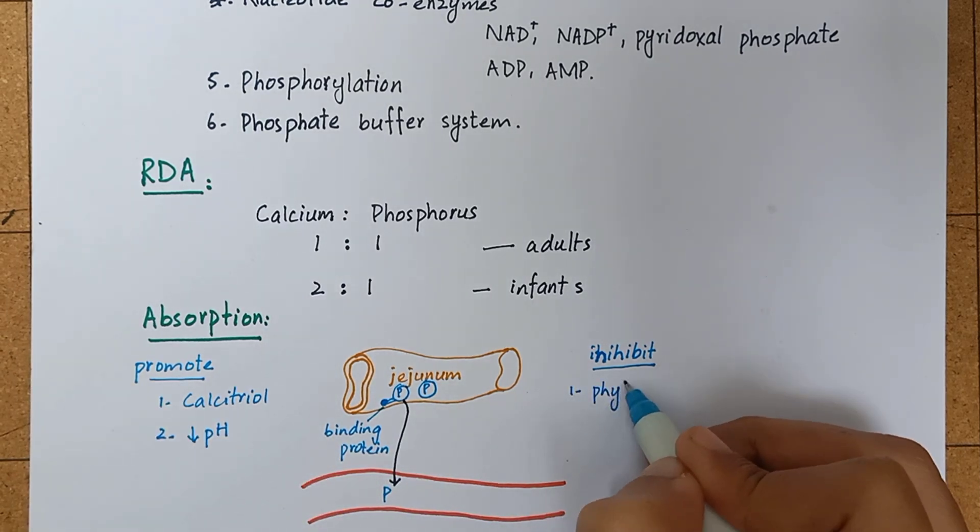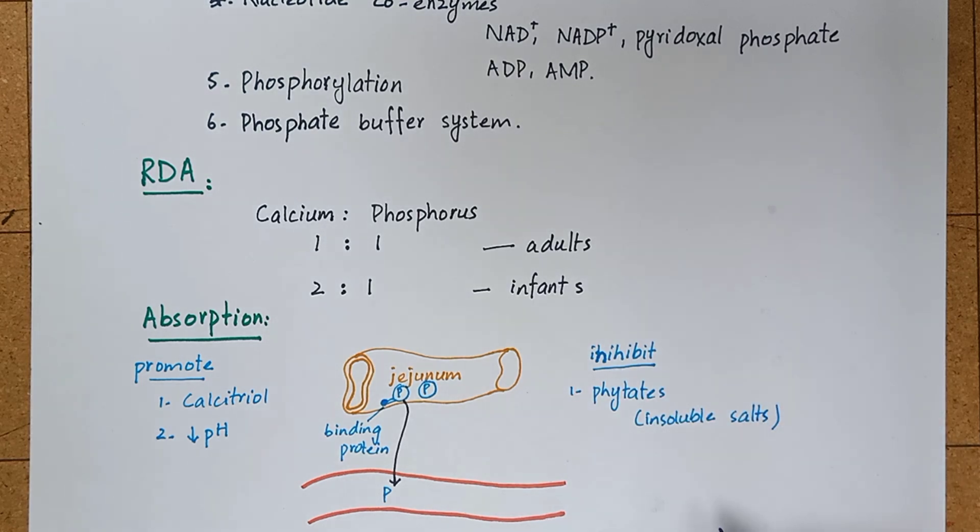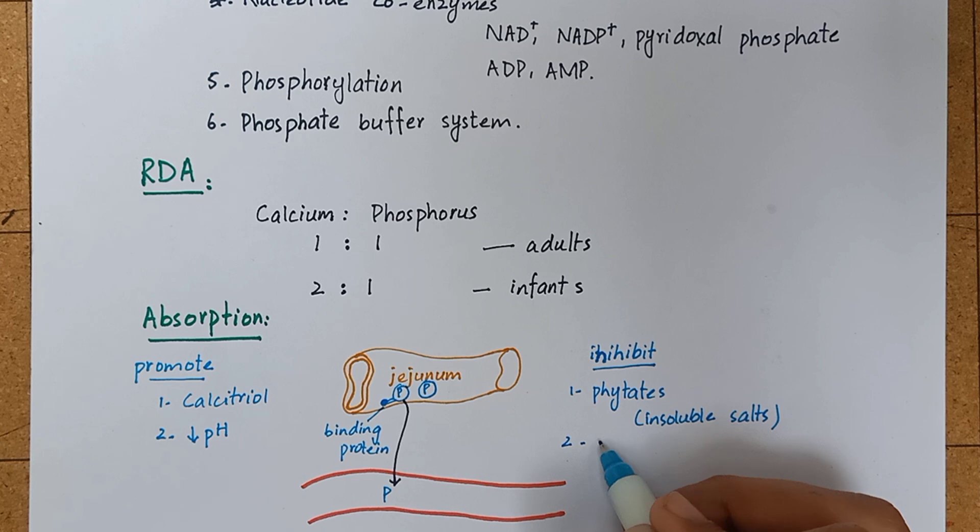The factors that inhibit phosphate absorption are phytates, which form insoluble salts with phosphate, decreasing its uptake by intestinal cells. High pH or alkalinity also decreases its absorption.